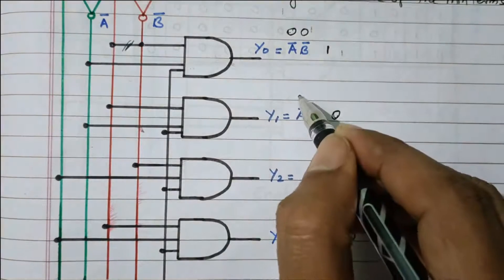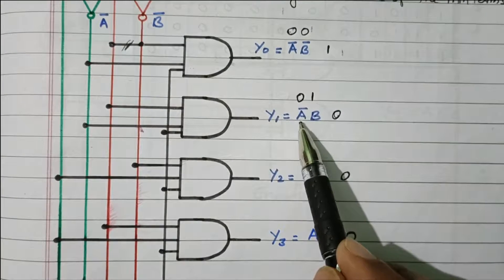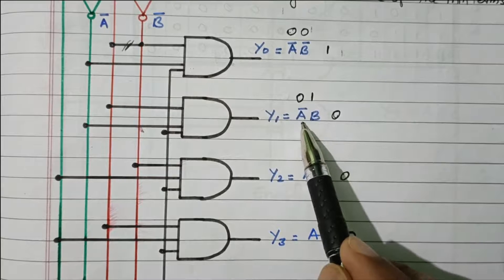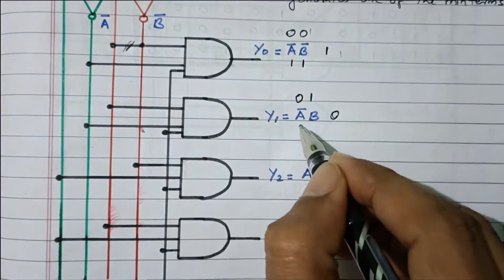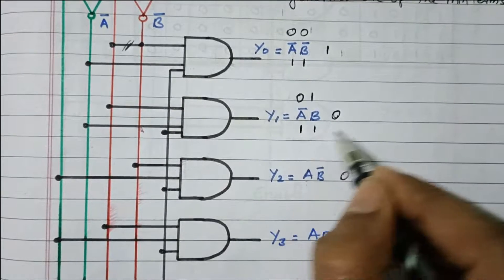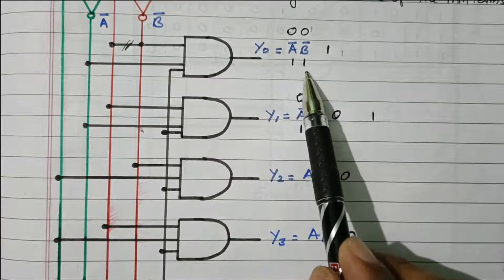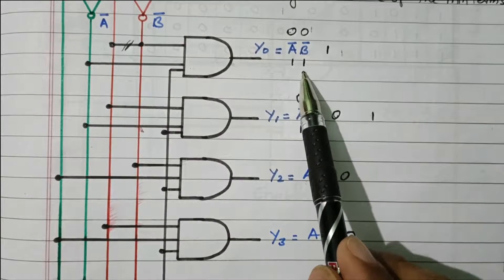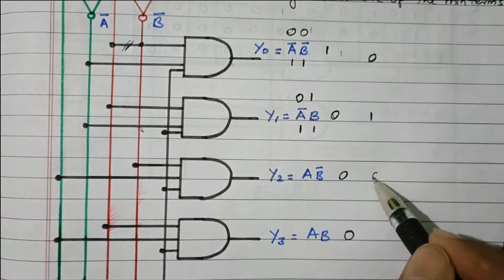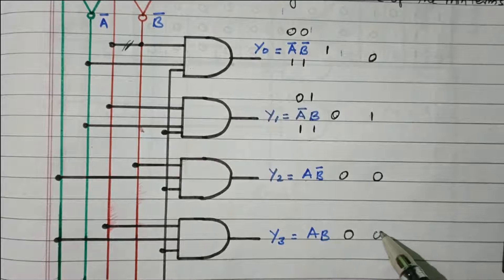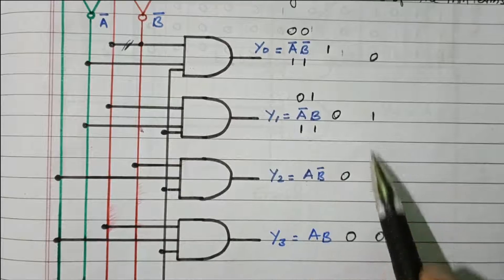The next possibility is 0,1, applicable for Y1. B equals 1 and A is 0, but we connect A-bar, so A-bar becomes 1. A-bar and B are both 1, so the Y1 AND gate gives a high output. For the other gates, since B is 1, B-bar becomes 0, giving 0 output. So only Y1 will be 1 and remainders are 0.